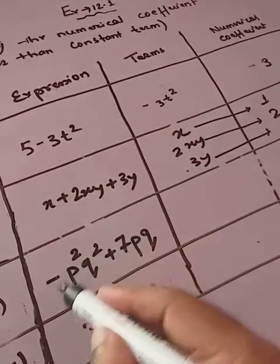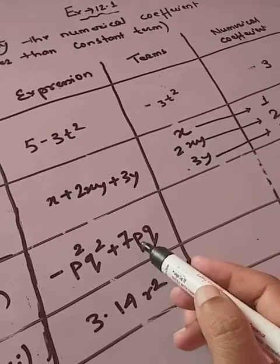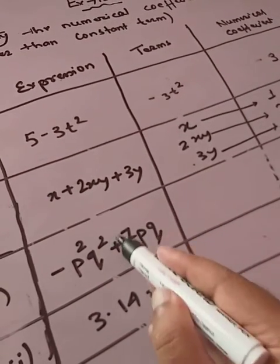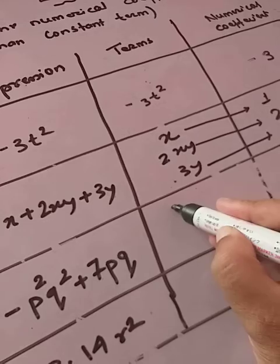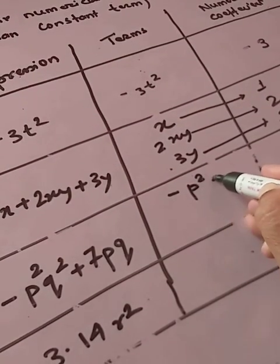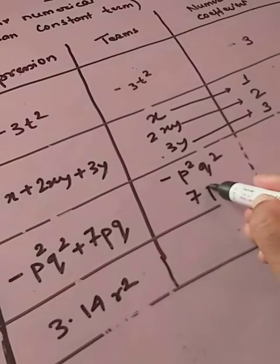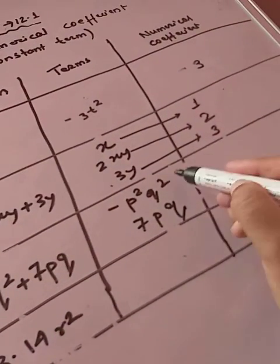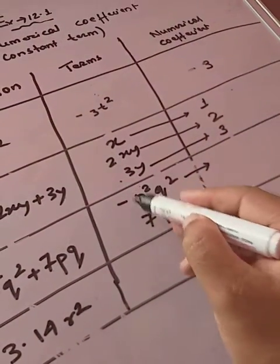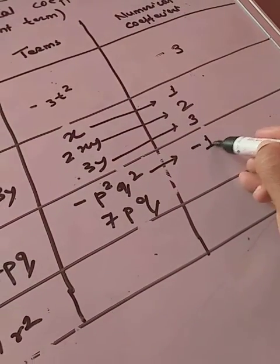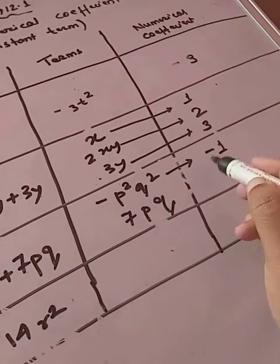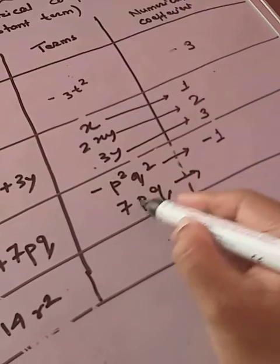So easy. Now, we will again write the terms again. How many terms are there? 1 and 2. So, let's write the term first. Minus p square, q square. And this is 7pq. So, what is the numerical coefficient for this? Any number you can see? No. That means 1 is there. So, minus 1. Minus sign is there. Be careful. Minus 1.